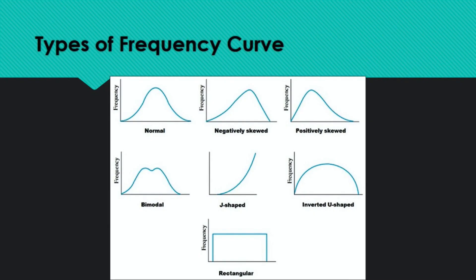Before moving to curves: let me differentiate frequency polygon from frequency curve. The only difference is: when drawing a frequency polygon, you connect points using a ruler/scale — straight lines between points. When drawing a frequency curve, you connect points free-hand — giving a smooth curve. The shape of the distribution is better understood from a frequency curve. That's why it's called a frequency curve — free hand — while a polygon is drawn by scale.